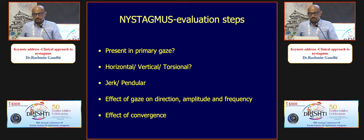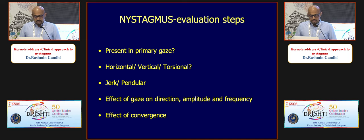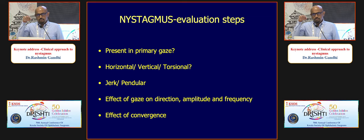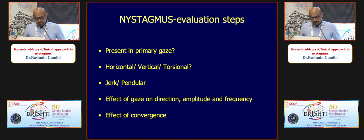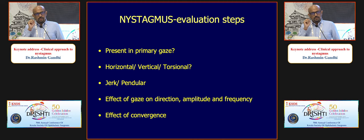If nystagmus is absent in primary gaze, two possibilities exist. End-point nystagmus is physiological — it occurs only at the extreme end of gaze and is generally transient. Gaze-evoked nystagmus starts before the extreme end of gaze, is sustained, and indicates a problem in the cerebellum or brainstem. In young patients it can be a sign of demyelination; it can also be caused by drugs.